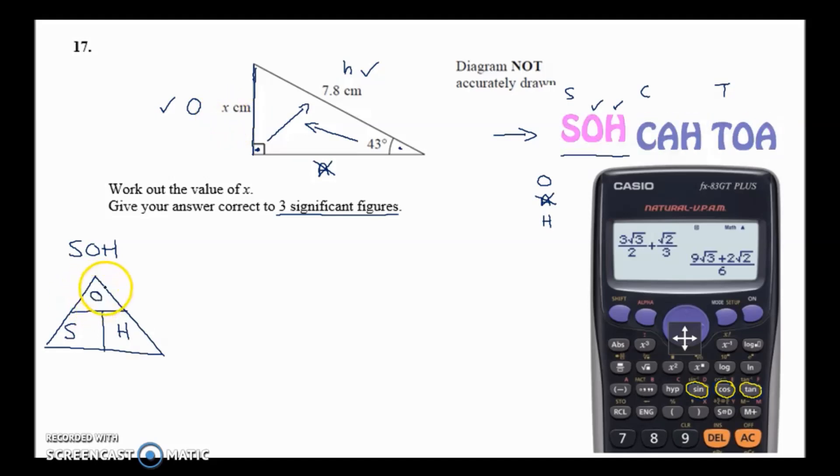S stands for sine, so it's sine times H. Now H is the length here, so what is the value of that? 7.8.